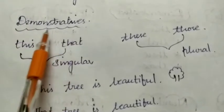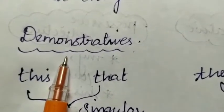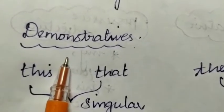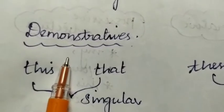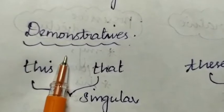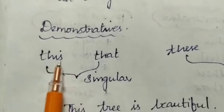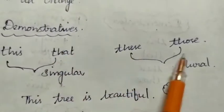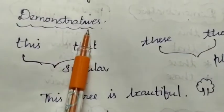Demonstratives. What is a demonstrative? Demonstrative pronouns are also used as determiners. They are used to point to something specific within a sentence, and they focus attention on the nouns that they are replacing. The words are: this, that, these, those.